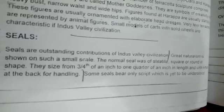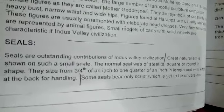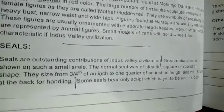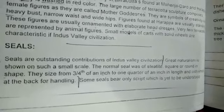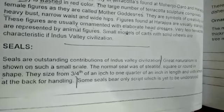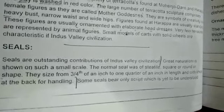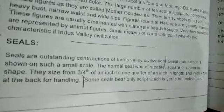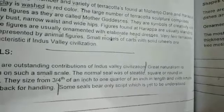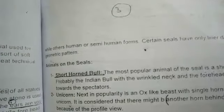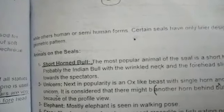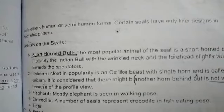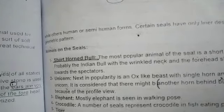Great naturalism is shown on such a small scale. The normal seals were of state, tight square or round in shape. They size from three-fourths of an inch to one-quarter of an inch in length, with a knob at the back for handling. Some seals bear only script, which is yet to be understood, while others show human or semi-human forms. Certain seals have only linear design in geometric pattern.